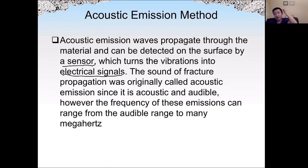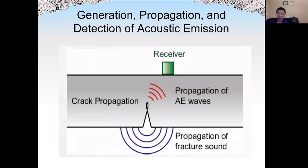We call this acoustic emission. Most of the frequency can be heard, but if it is beyond 20 kHz it is not audible anymore. The receiver passively receives the signal. If a crack is generated inside the material due to loading or impact, that acoustic emission wave will be received by the receiver. The receiver will stay in position for a long time, just waiting for the signal to come.